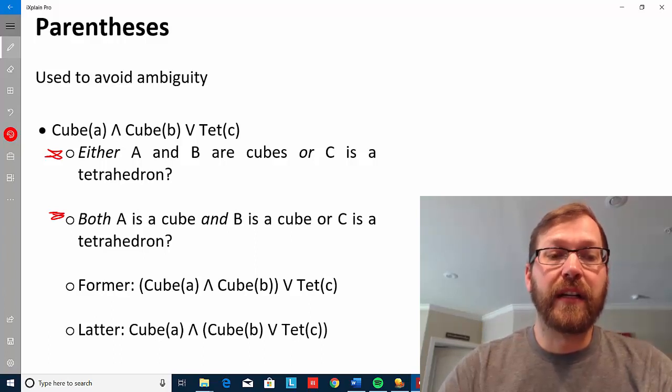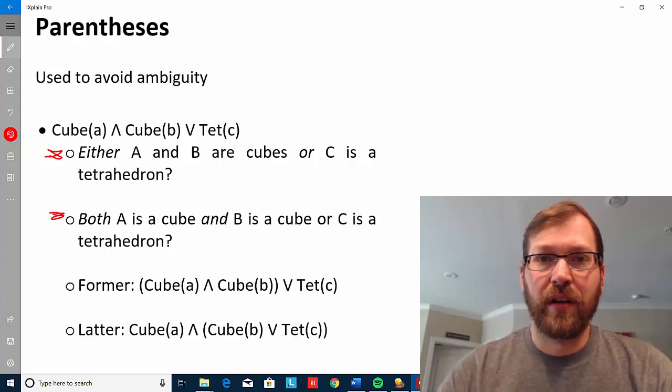The second way of reading it is both A is a cube and B is a cube or C is a tetrahedron. Notice that those commit you to different things being true or different things being false.